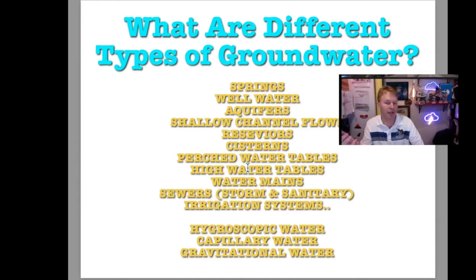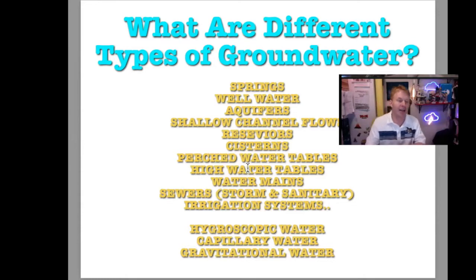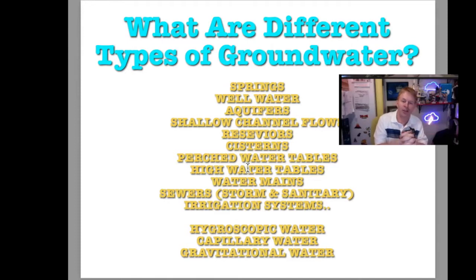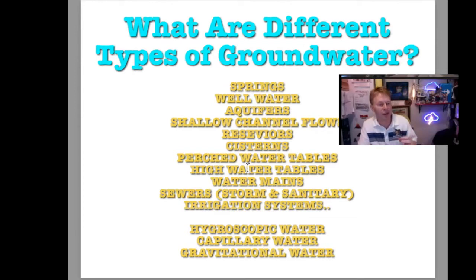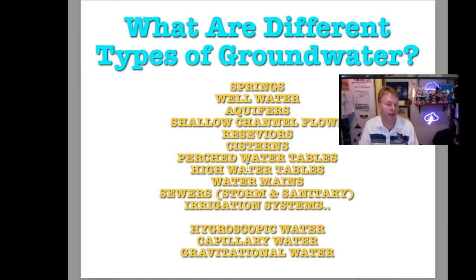Something I'm trying to figure out a new name for — I call it a shallow channel flow, micro spring, something like that. Reservoirs, cisterns. High water tables, water mains. Most people don't think of groundwater coming from plumbing, but it certainly can. Sewers — storm and sanitary sewers. Irrigation systems can create groundwater. And then something more nuanced: hygroscopic water, capillary water, and gravitational water.